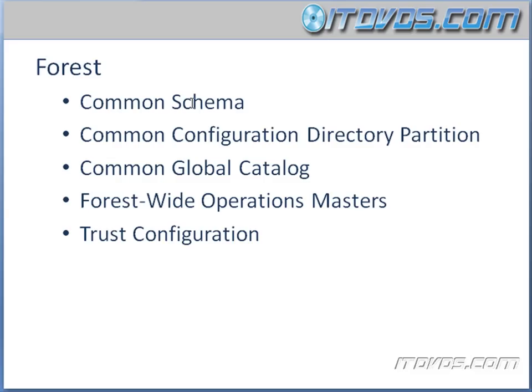The first thing they're going to share is a common schema. The Active Directory schema is basically what defines all of the objects in Active Directory. So let's say we have a user in Active Directory — that user has an address field, a password, a first name field, a last name field, and the reason it has those fields is because they are described in the Active Directory schema.